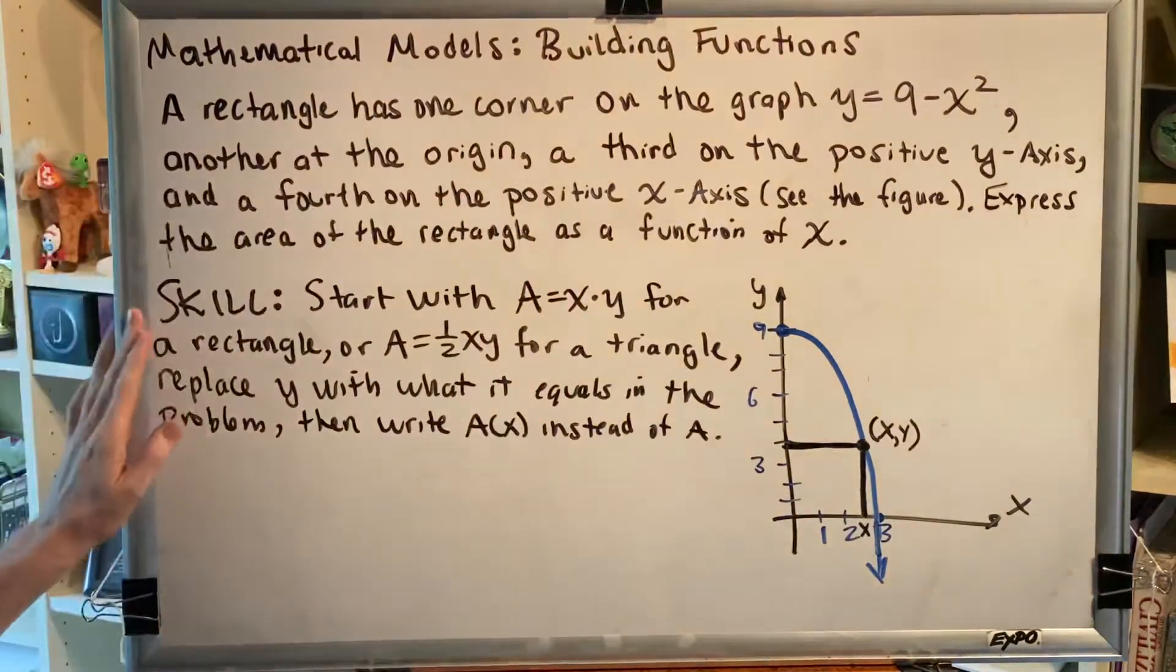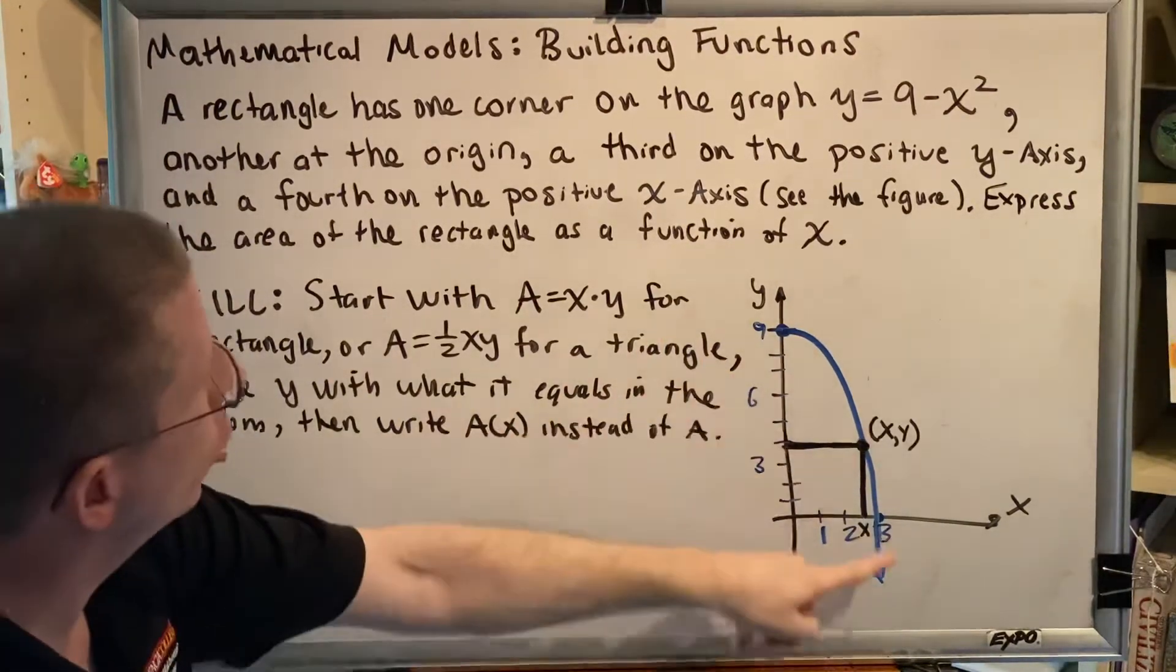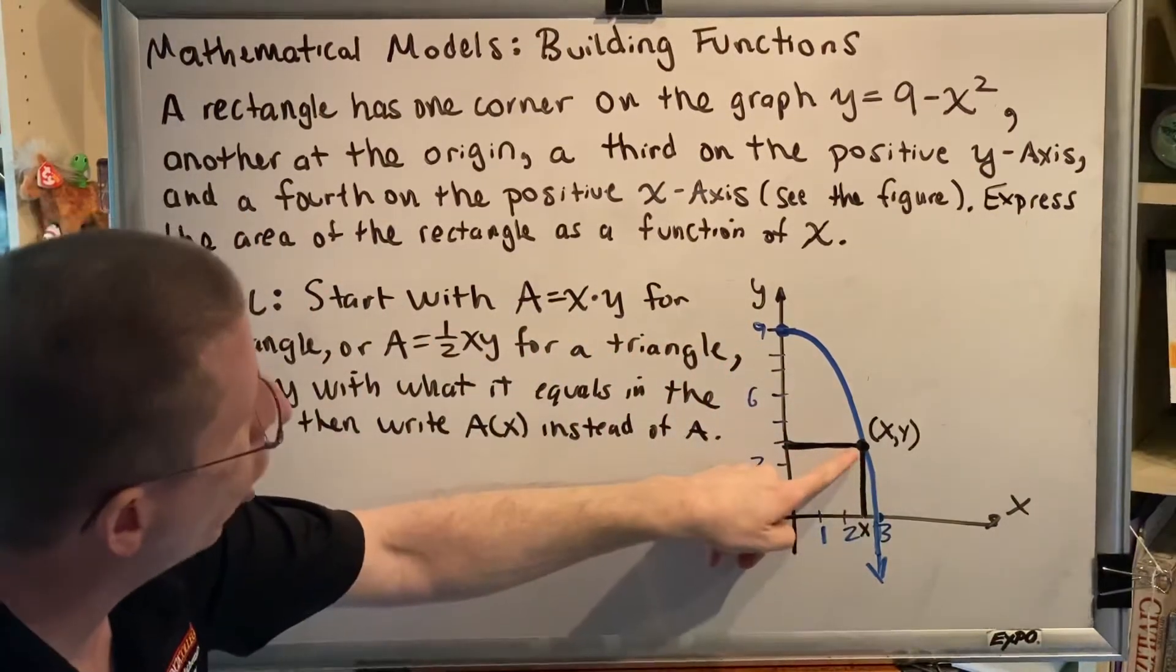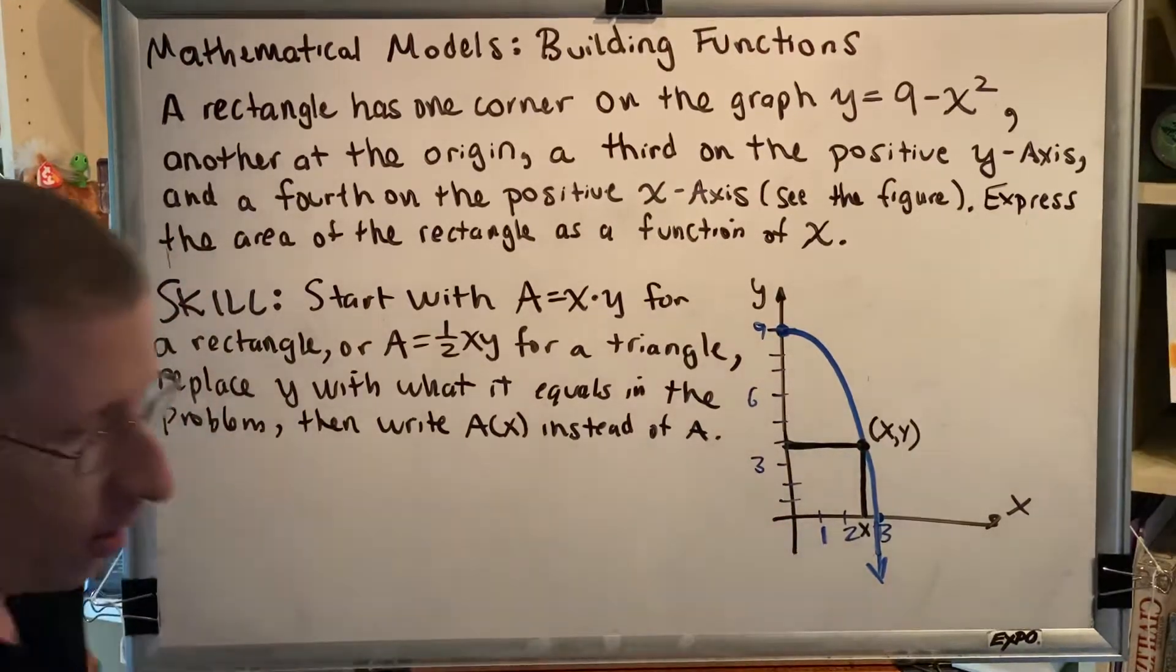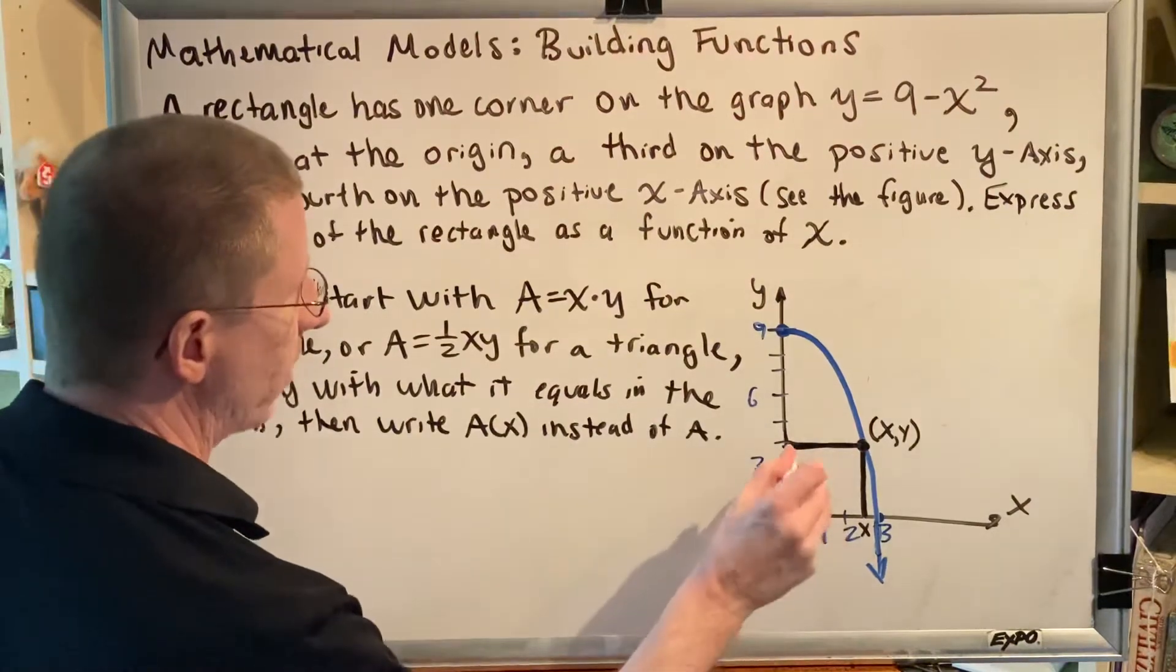First, let's look at the problem. A rectangle has one corner on the graph of y equals 9 minus x squared, shown here in blue, another at the origin. So there's the point on the curve, there's the origin, a third on the positive y-axis, and a fourth on the positive x-axis.